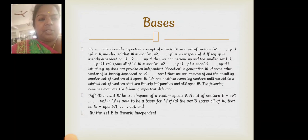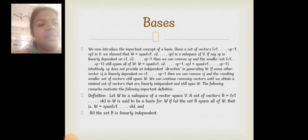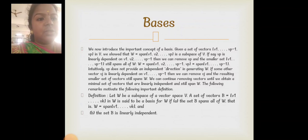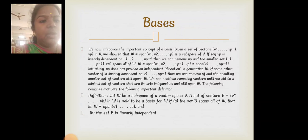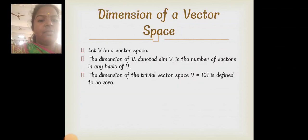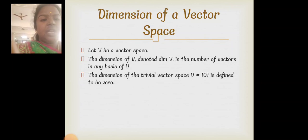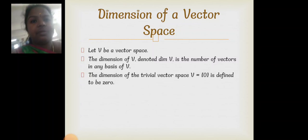Another important definition in vector spaces is the basis. A set of vectors B = {V1, V2, ..., Vk} in W is said to be a basis for W if the set B spans all of W, i.e., W = span{V1, V2, ..., Vk}. The dimension dim(V) is the number of vectors in any basis of V.